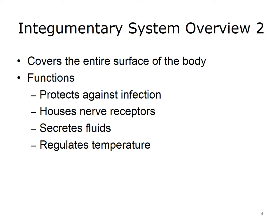The Integumentary System is an extremely large, flat, flexible body system that covers the entire surface of the body. The primary functions of the Integumentary System are protection, temperature regulation, and secretion of fluids. The Integumentary System also houses nerve receptors. The skin serves as a protective membrane against invasion from bacteria and other potentially harmful organisms.